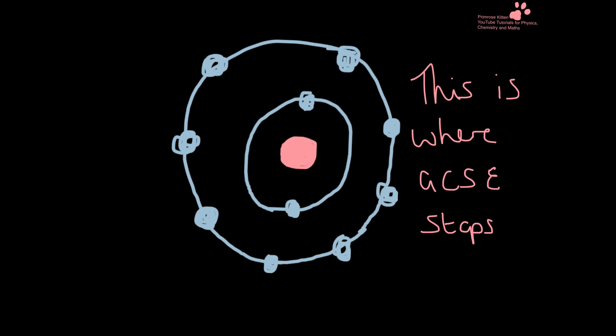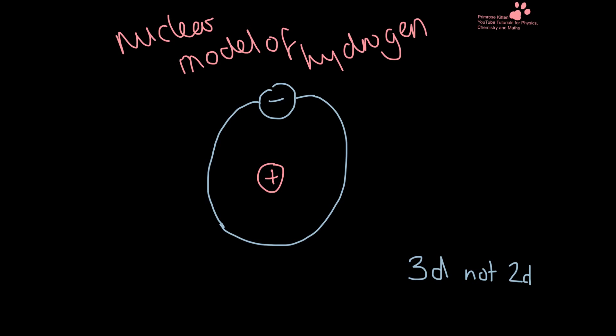This is where your GCSE stops — and it's not that Bohr's model is wrong, it's just not a complete picture. Things are a lot more complicated than this. You have to remember the nuclear model of hydrogen is 3D, not 2D as we've always drawn it at GCSE. For Bohr's model to be correct you would have an electron orbiting the nucleus at a fixed location, in a fixed radius, and it wouldn't be moving anywhere in between.